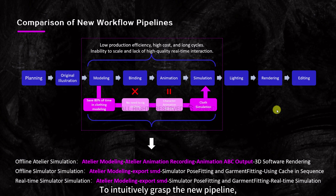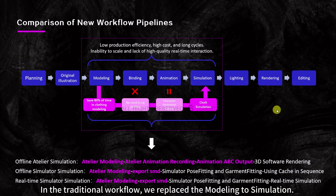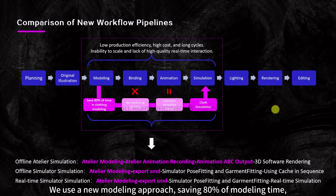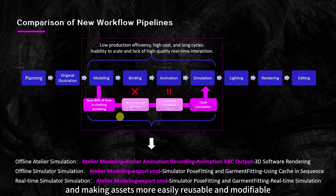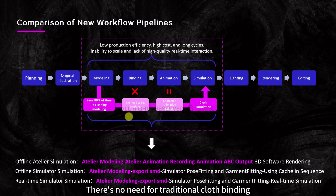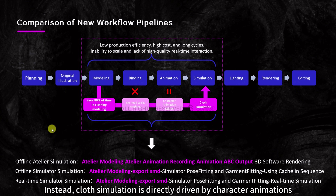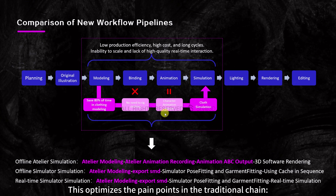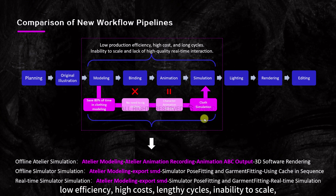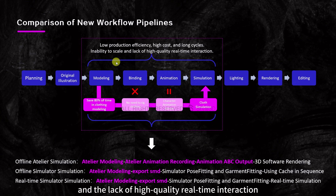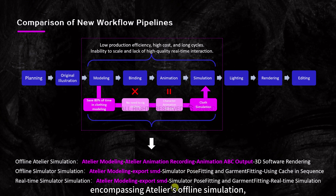To intuitively grasp the new pipeline, let's compare it with the traditional pipeline. In the traditional workflow, we replaced the modeling-to-simulation step using a new modeling approach, saving 80% of modeling time and making assets more easily reusable and modifiable. There's no need for traditional cloth binding — cloth simulation is directly driven by character animations. This optimizes pain points in the traditional chain: low efficiency, high costs, lengthy cycles, inability to scale, and the lack of high-quality real-time interaction. Atelier's roles and new workflow are highlighted in pink, encompassing Atelier's offline simulation and the simulator's offline and real-time simulation.